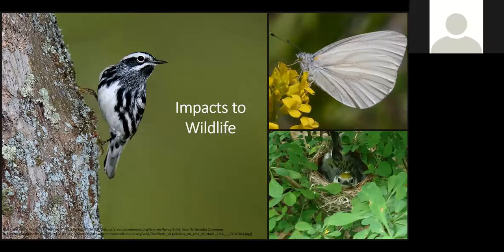Invasive plants can impact wildlife with cascading effects on all levels of the food web when they out-compete and displace native plants that wildlife depend on. For example, the West Virginia white butterfly, listed as a species of special concern in Vermont, emerges early in spring and depends on toothwort as a host plant. The invasive plant garlic mustard exudes a similar chemical attractant to native toothwort, which can confuse the butterfly into laying its eggs on garlic mustard instead. The life cycle cannot complete because the plant is toxic to the caterpillars.